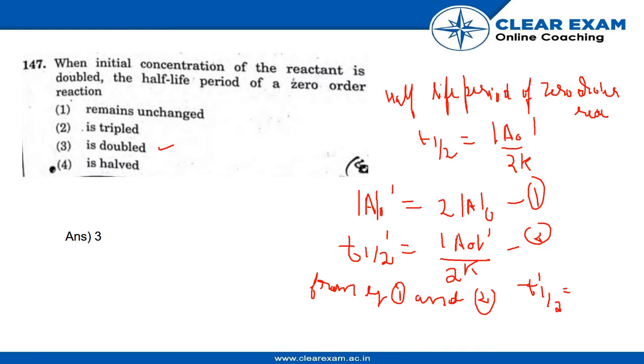t1/2 dash equals twice of A₀ divided by 2k, because A₀ dash is twice of A₀. So twice of A₀ divided by 2k - the 2 cancels out.